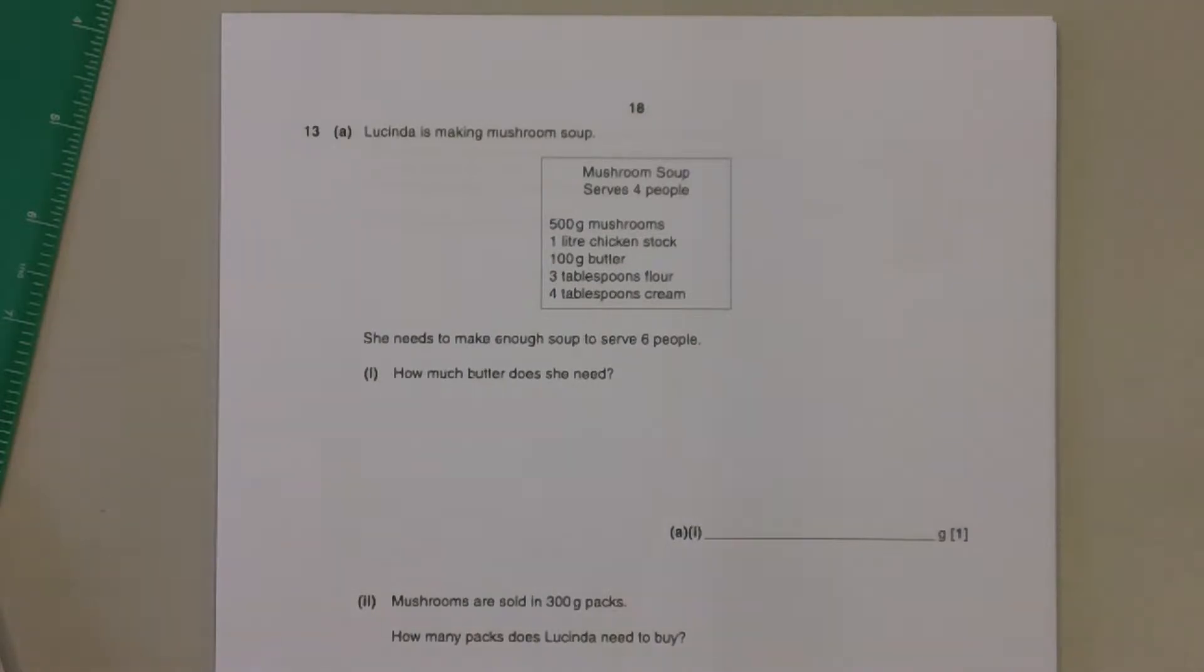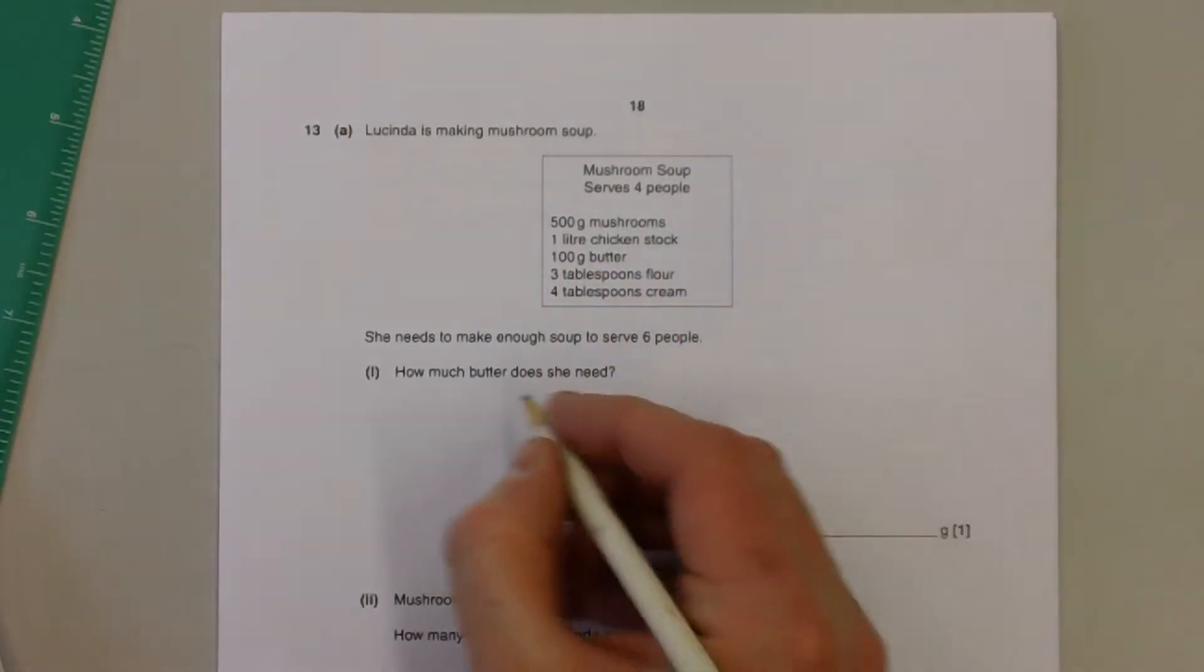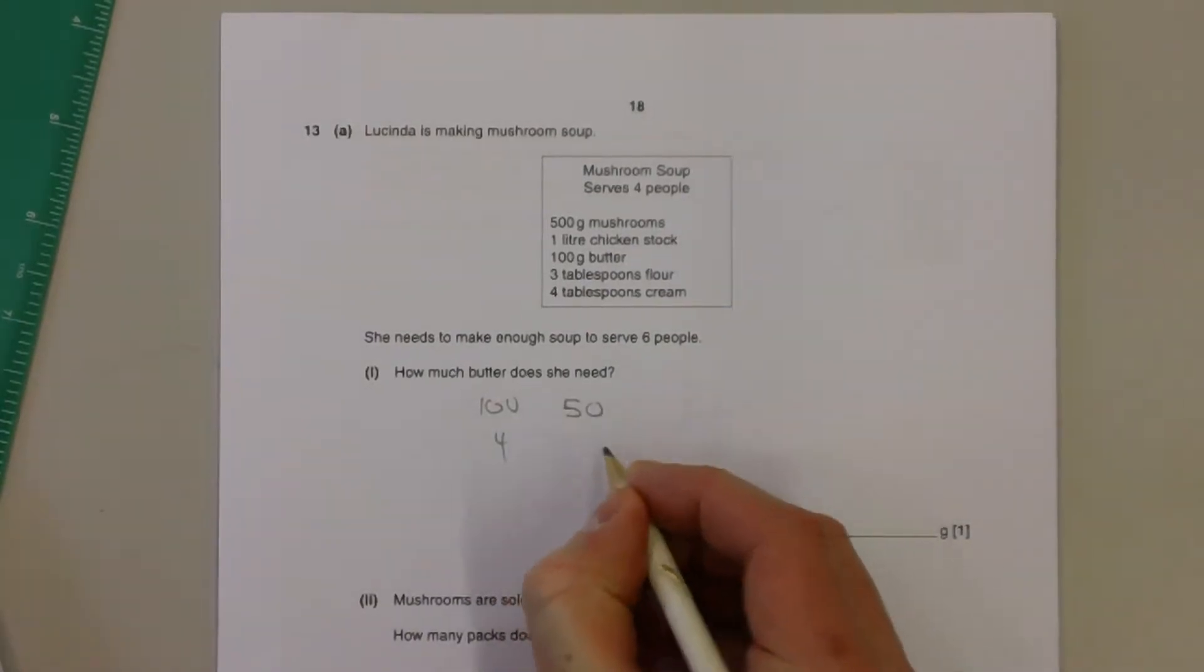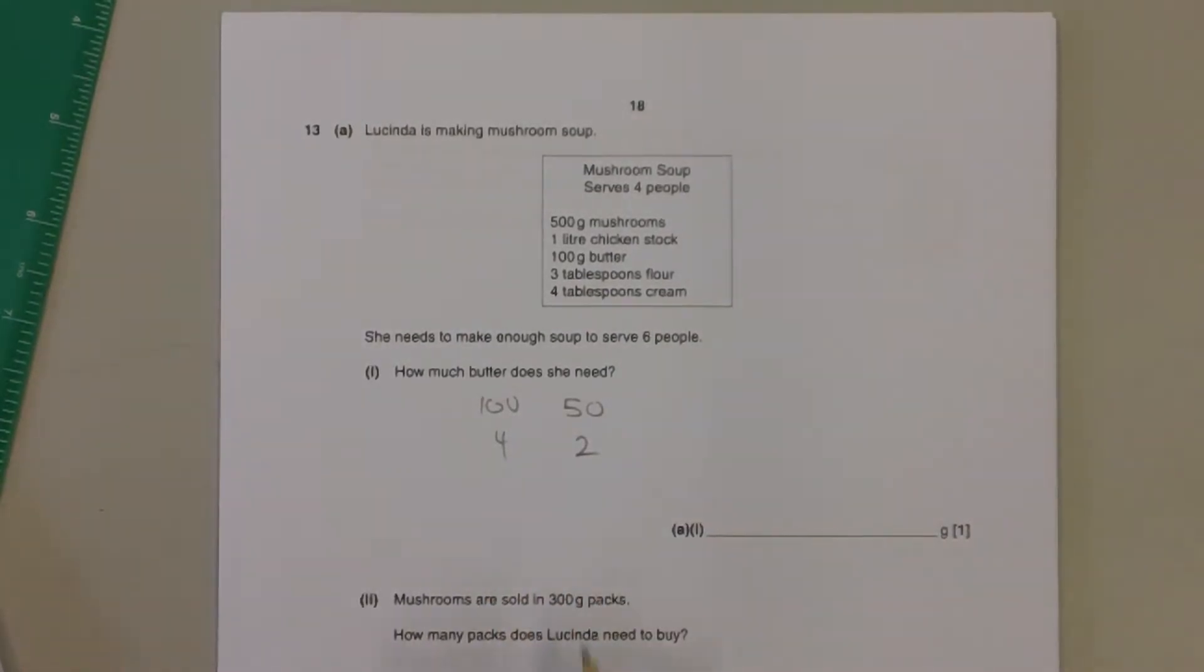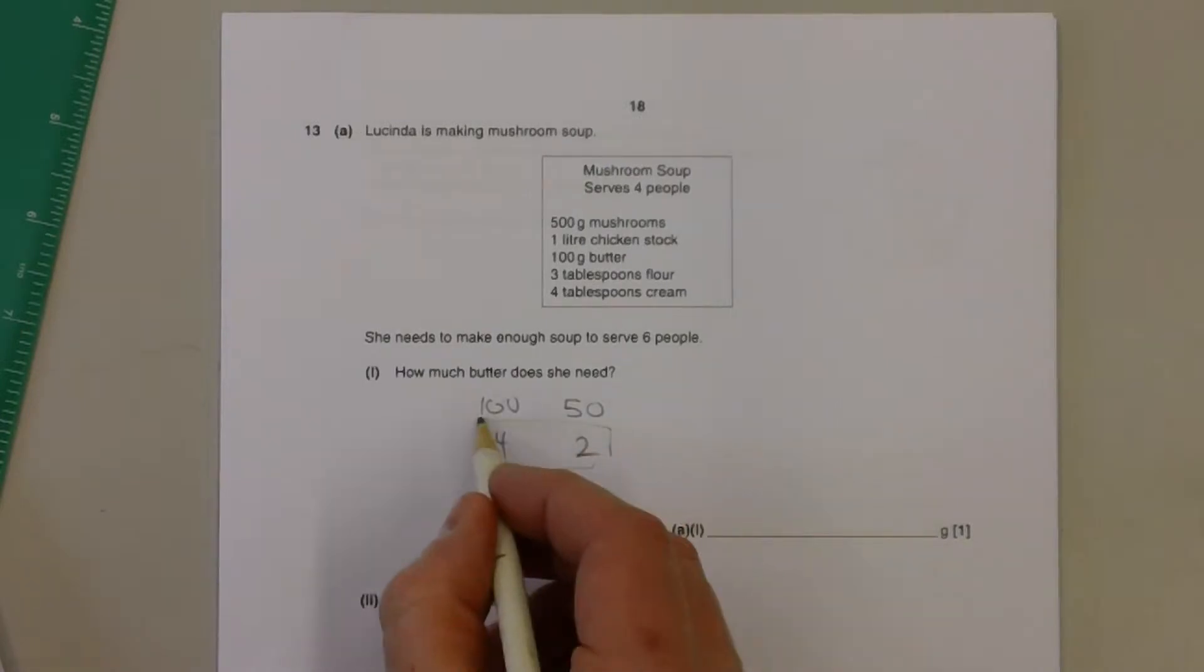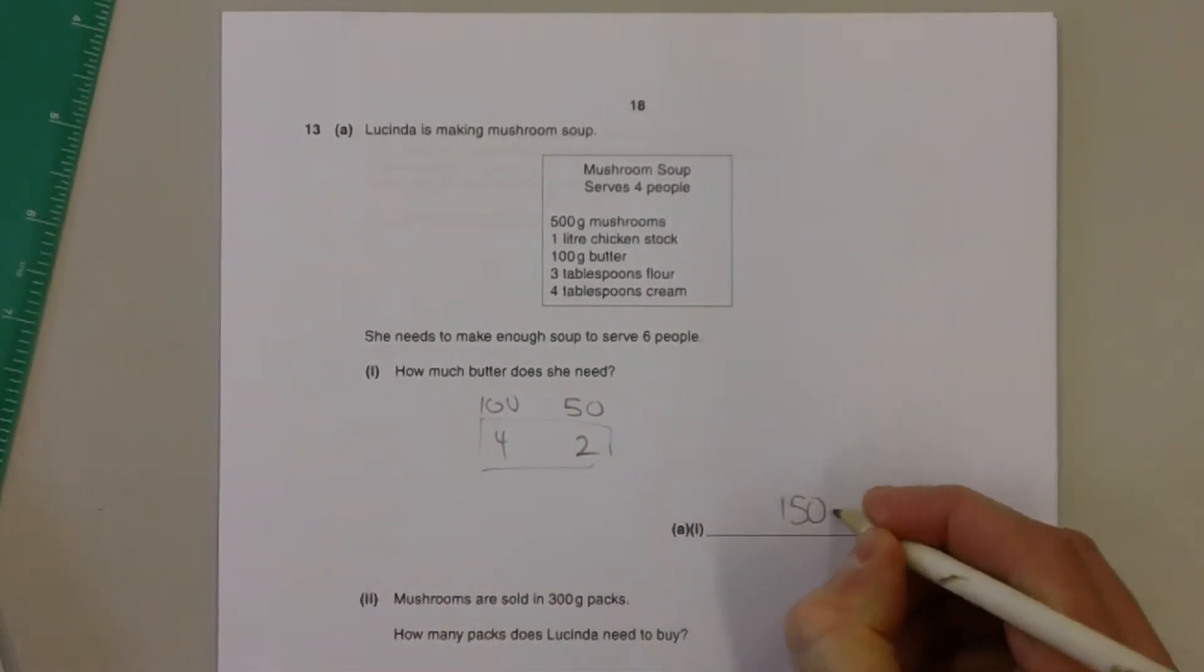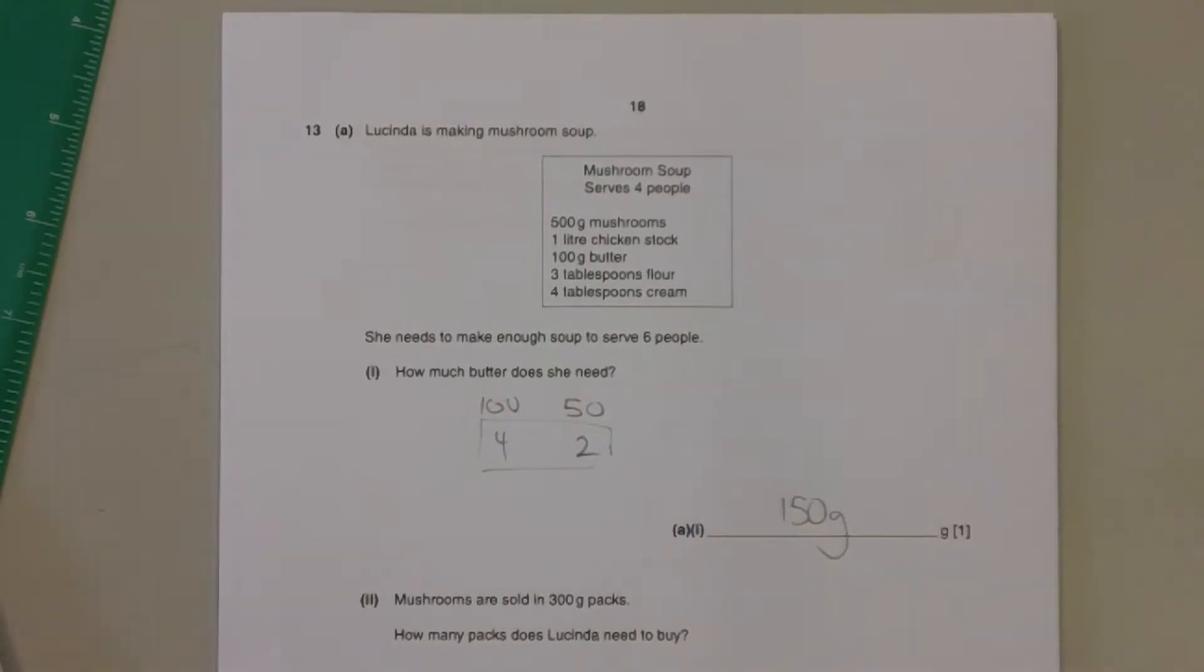Well, if we need 100 grams of butter for four people, then we would need 50 grams of butter for two people. Altogether that would be how much we need for six people, so 150 grams of butter.